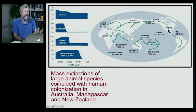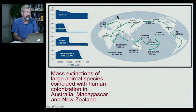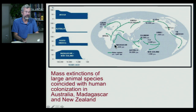Species we don't see anymore that were here just 10,000 years ago — giant sloths, saber-toothed tigers, phenomenal species — all disappeared with the arrival of humans. More recently, humans occupied Madagascar only in the last 1,500 years, New Zealand in the last 1,000 years, and again, human arrival coincided with mass extinction.